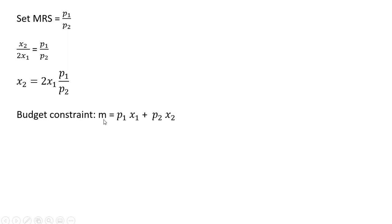This consumer's budget constraint is m = p₁x₁ + p₂x₂, where m is money income, p₁ is the price of good 1, and p₂ is the price of good 2.